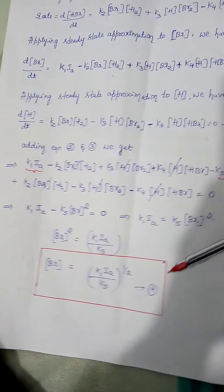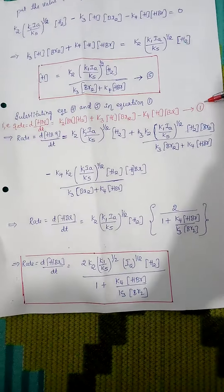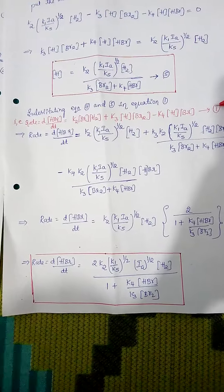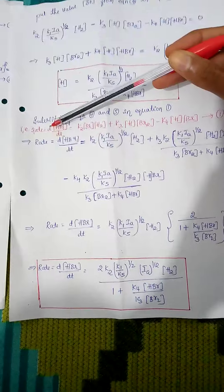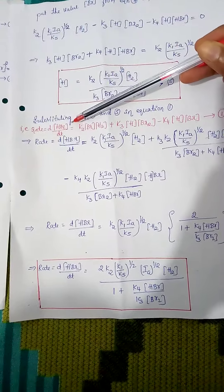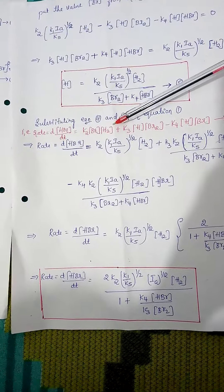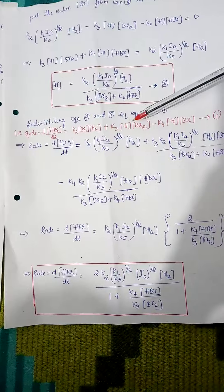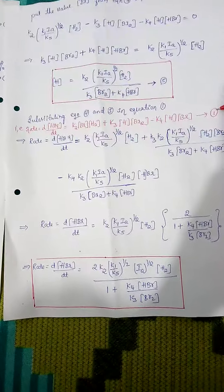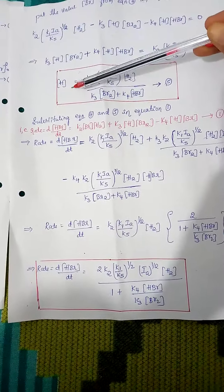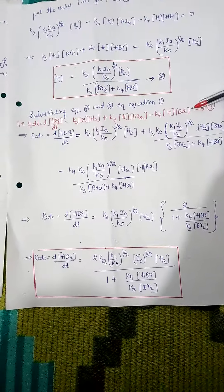Substitute the value from equation 4 and the concentration of H from equation 5 into equation 1. Equation 1 states: d[HBr]/dt = K2·[Br]·[H2] + K3·[H]·[Br2] − K4·[H]·[HBr]. We already know both [H] and [Br], so we substitute those values into equation 1.